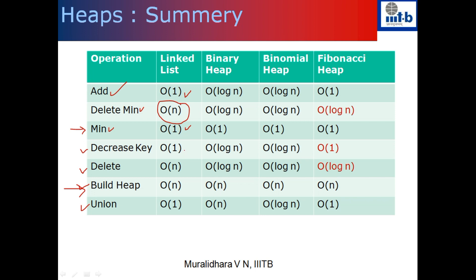Decrease key: if I give you the pointer to the node whose value needs to be decreased, I can just go there and decrease the value. If the value decreases to something smaller than the minimum, I can change the minimum pointer. This can be done in O(1). The delete function is going to be O(n) because in general you might ask me to delete the minimum, and then I have to find the new minimum, which takes O(n). Building a heap is just creating a linked list with n elements — it takes O(n) time. If you give me two priority queues, since it's a doubly circular linked list, merging them takes O(1) time.